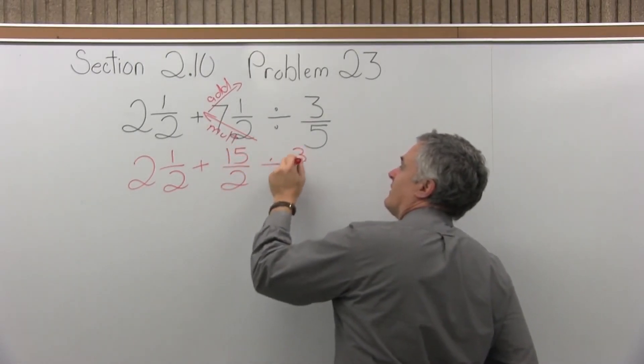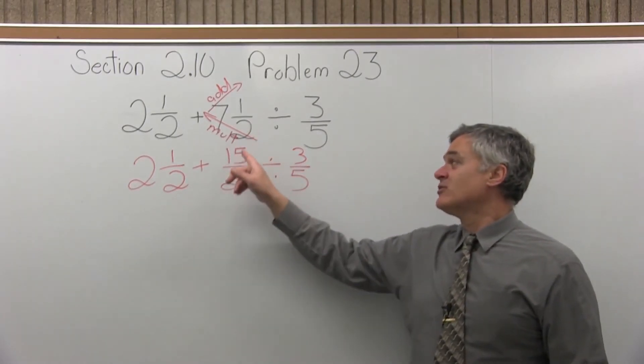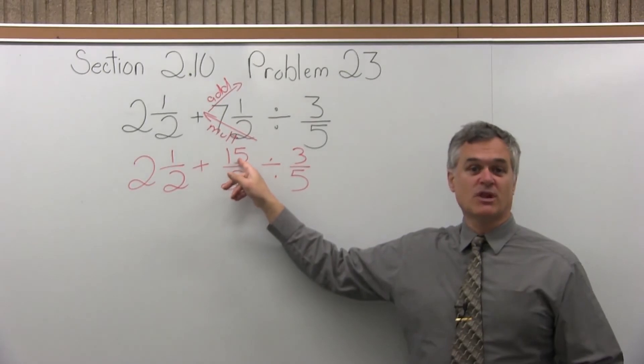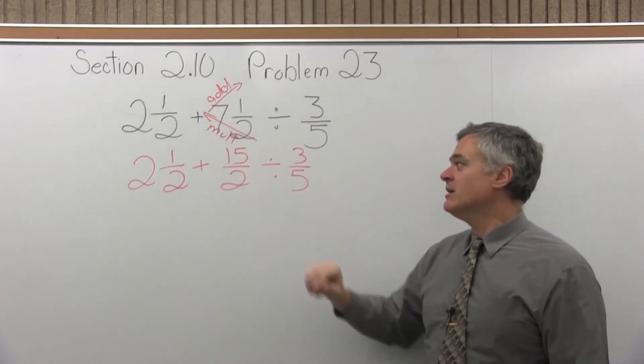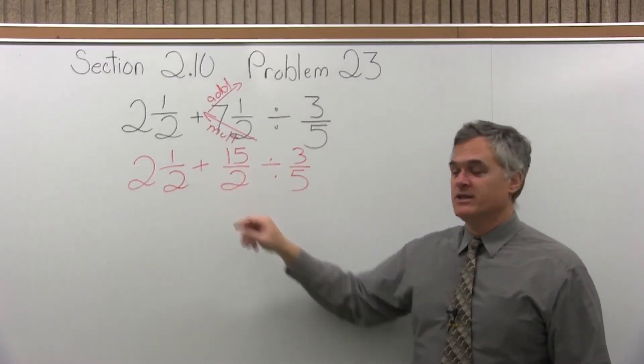And I'll just leave divided by three fifths for one step. So the first thing I did is I changed the seven and a half to an improper fraction, a fraction with a larger numerator than denominator, so that I can finish off that division. And again, the division must be done before the addition.